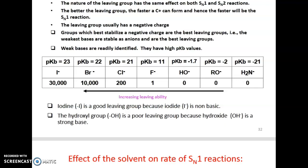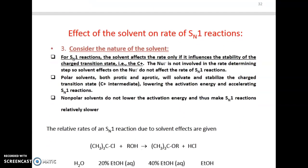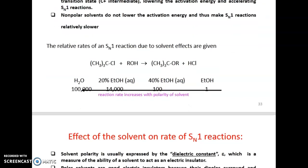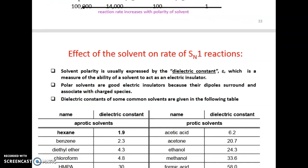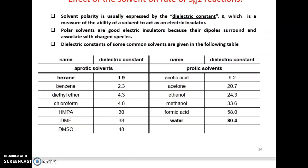Effect of the solvent on the rate of SN1 reactions: as solvent polarity increases — from 40% ethanol to 20% ethanol to pure water — the rate of reaction increases, showing the strong influence of polar solvents on SN1 reactions.